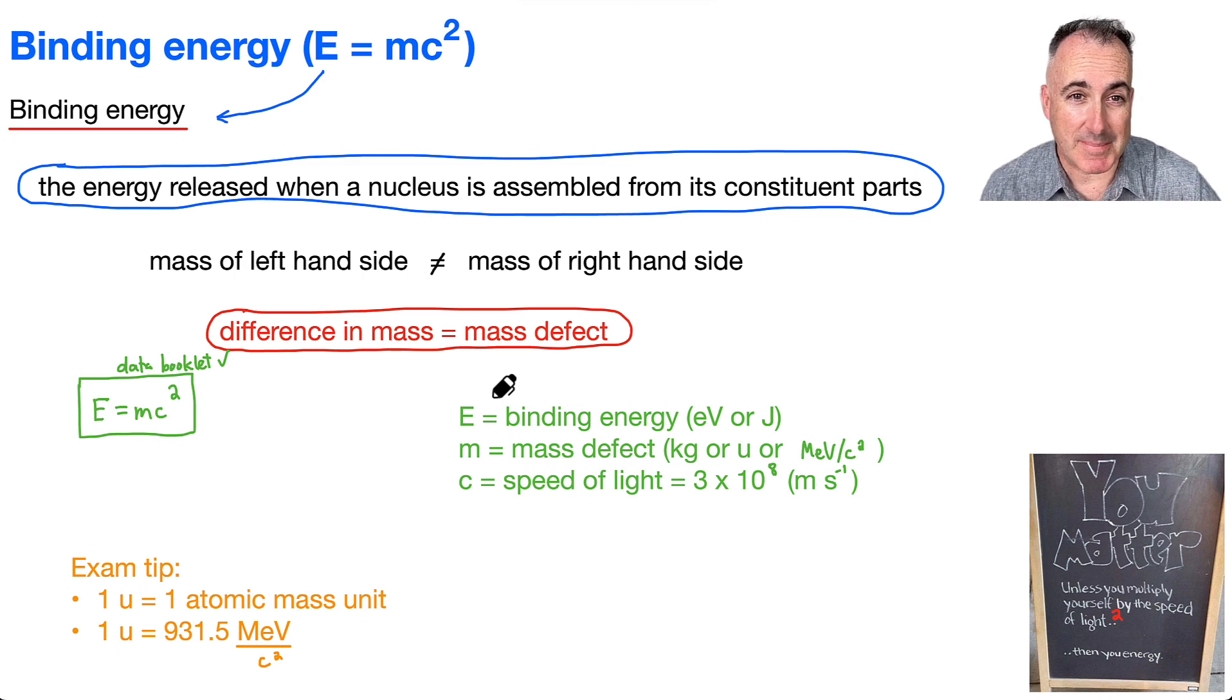Then we've got mass defect. That's your missing mass, that's this amount that went missing. That's either in kilograms, which you're used to, and then we've got two different units now. We've got U, which is called an atomic mass unit, or we can measure in MeV per c squared. And it turns out that looks like a weird unit, but actually it's a great unit. It's basically a lazy person's unit. That's because one atomic mass unit, you don't have to memorize this, is in a data booklet. One atomic mass unit equals 931.5 mega electron volts per c squared. And then you have to multiply all that by c squared, not just by c. You actually multiply by the speed of light and you're supposed to square it.